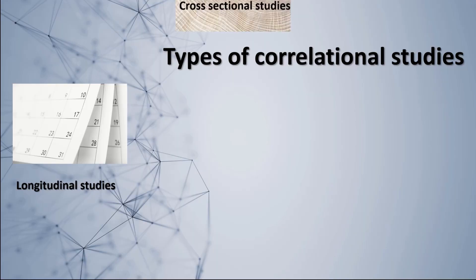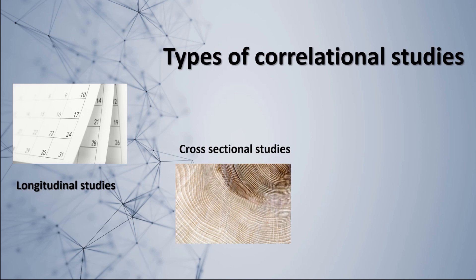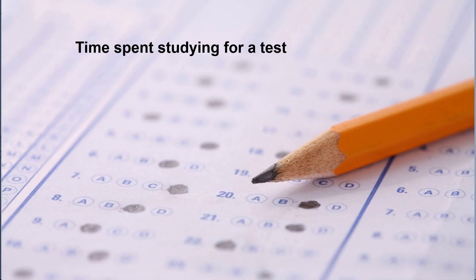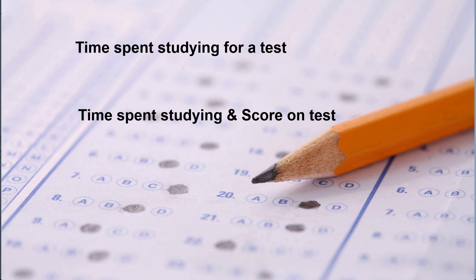The next type is called a cross-sectional study. These collect data at one moment in time — we are not going out over a period of time like with longitudinal studies. An example would be asking students how much time they spent studying for a test. The two variables would be time spent studying and their score on the test. Because I'm only getting this information one time, this is what makes it cross-sectional.